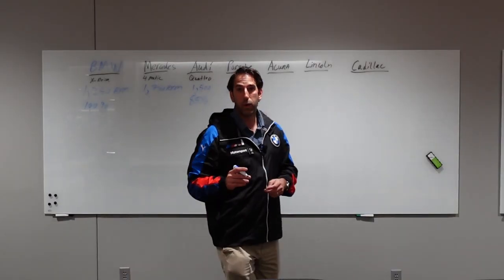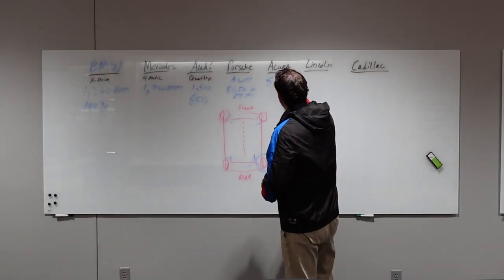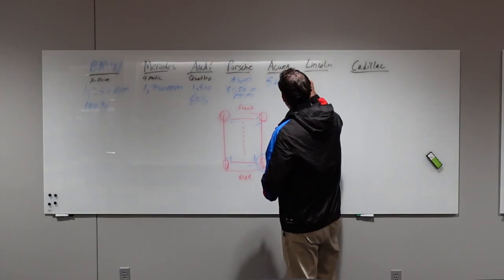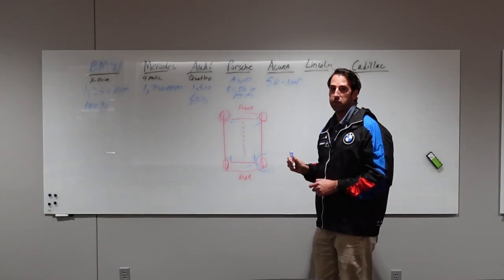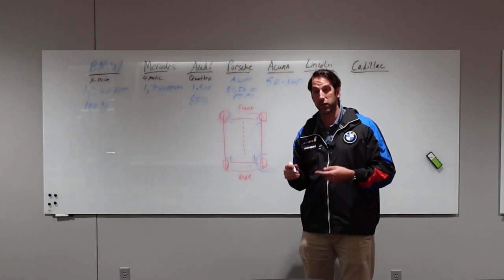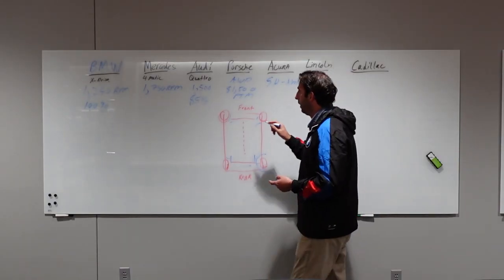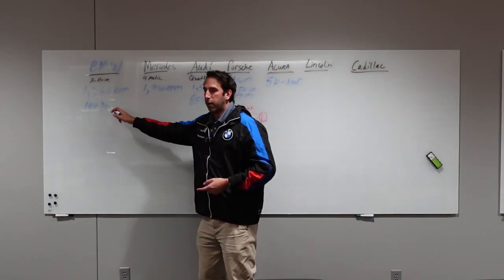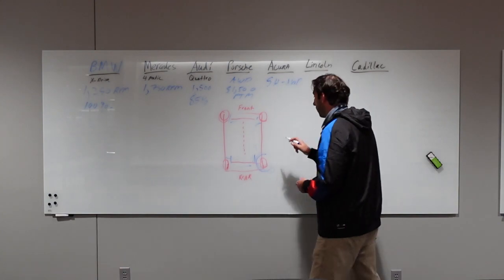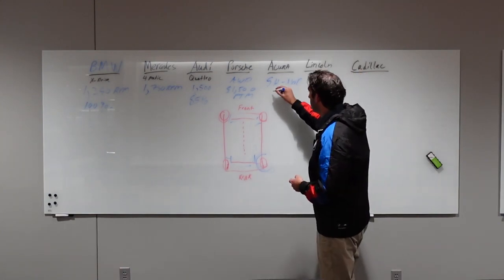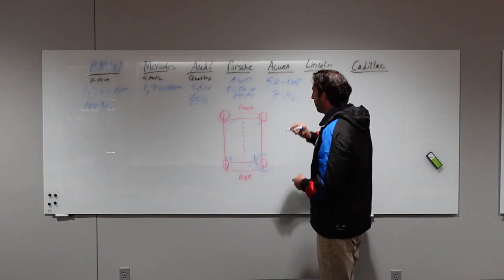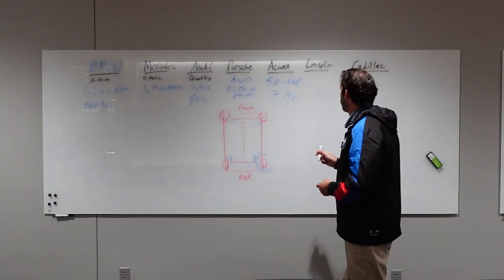Moving over to Acura, their system is the SH all-wheel drive system and it's a really good system. Acura was the first one to come out with a torque vectoring all-wheel drive system. Unlike the BMW that sends 100% of the torque if need be to the back, the Acura though can only do 70%. So again, a key difference.